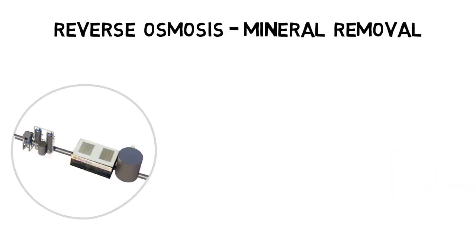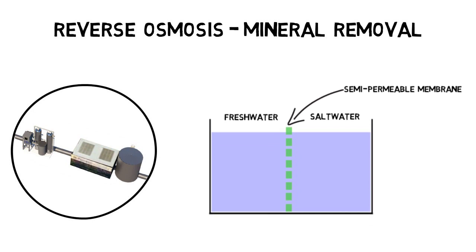Next is the reverse osmosis process where saltwater is separated from freshwater through a semi-permeable membrane. By applying pressure on the saltwater side, water molecules move from the freshwater side and leave minerals behind.